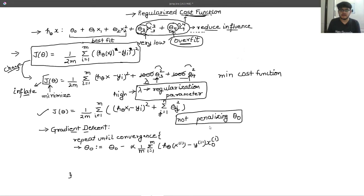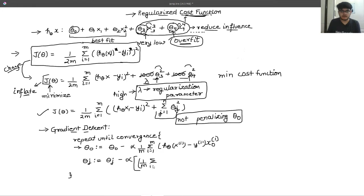With our regularization parameter, we are not making any changes to theta zero — we are only making changes to theta j (for j=1 to n). So we write theta j. We are going to update theta j because in this equation we have j equals 1 to n. We will update only these parameters so that we can regularize this term. It goes: theta j minus alpha times (1/m) times the sum from i=1 to m of (h_theta(x^i) - y^i) times x_j^i.